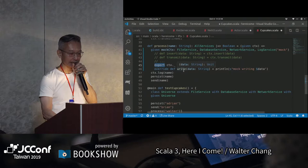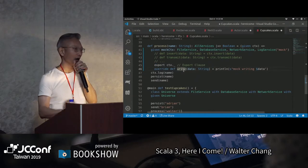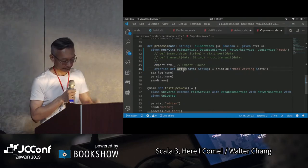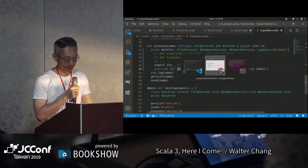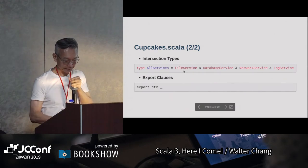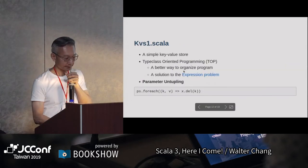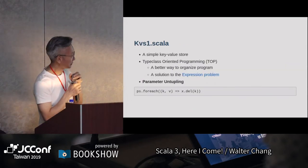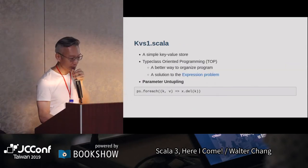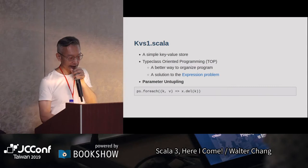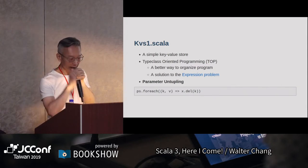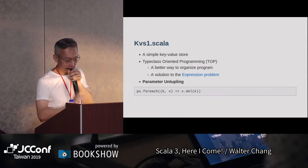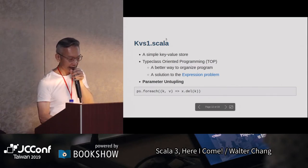然後我們再override我們所要mark的method，這樣就好了。好，KVS。我們有幾個example KVS，KVS1基本上就是一個很簡單的key value store。